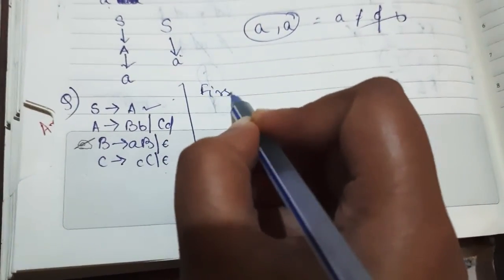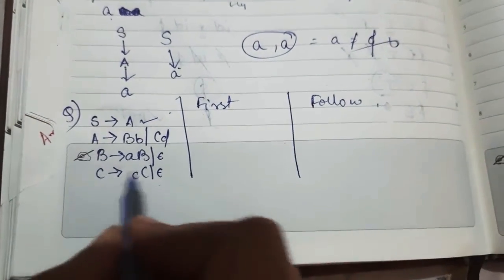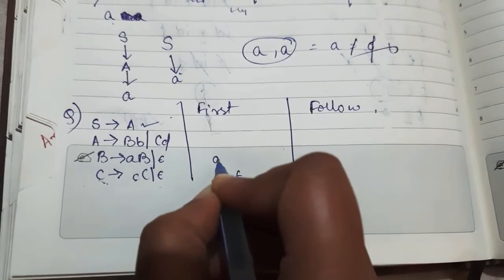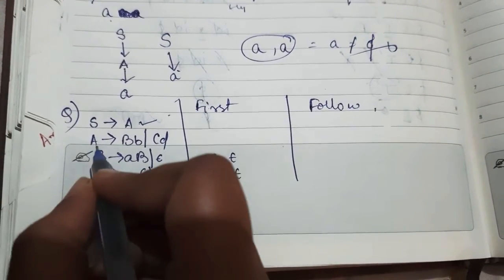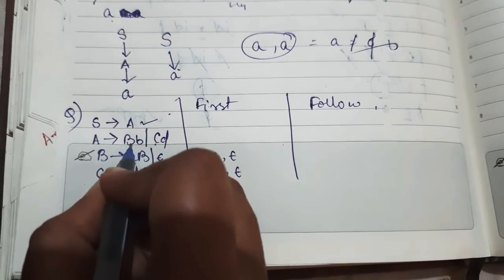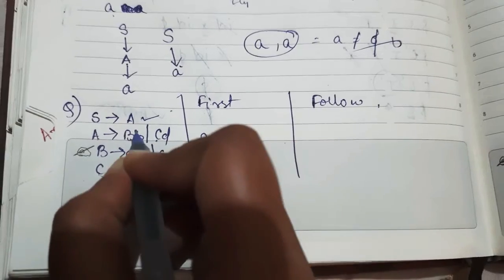And then we need to find the first and follow. So first for C is C or epsilon, for B is A or epsilon, for A depends on B and C. From B, A or epsilon - if I put A then it's A, if I put epsilon then it's B.